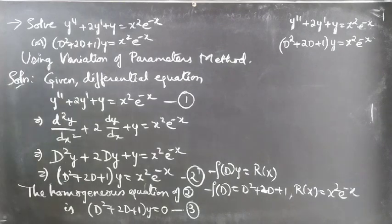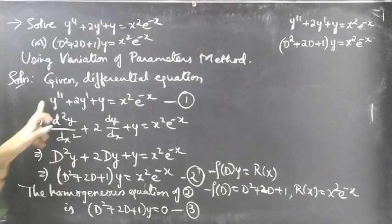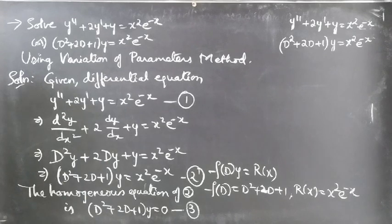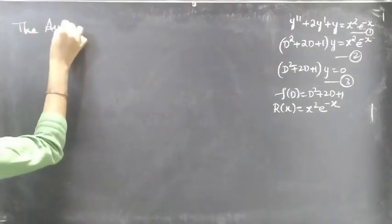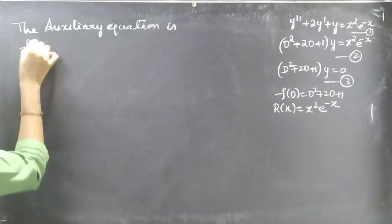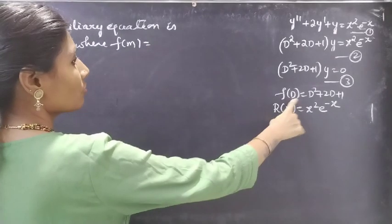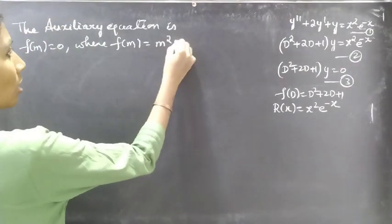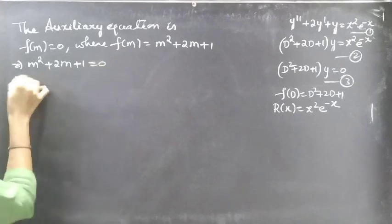We need to find the general solution, so first we find the solution of the homogeneous equation. Since equations 1 and 2 are the same, this also gives the general solution of equation 1. The auxiliary equation is f(m) = 0, where f(m) = m² + 2m + 1, so the auxiliary equation becomes m² + 2m + 1 = 0.